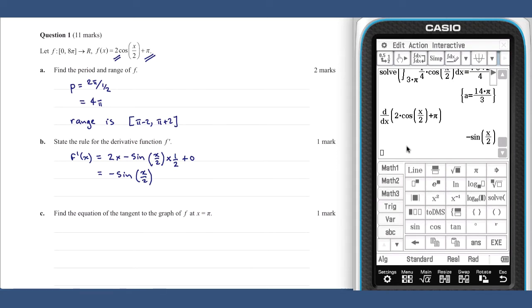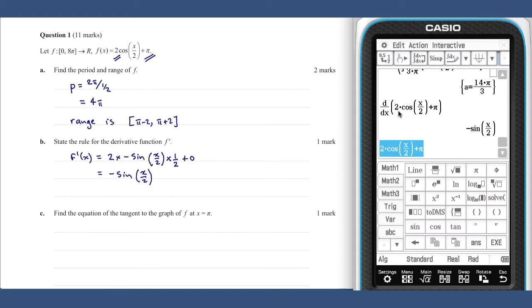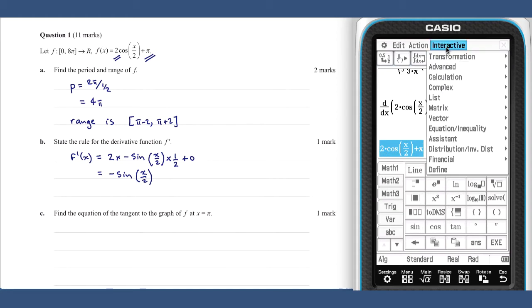For part c we need to find the equation of the tangent to the graph at x equals pi. This question is only worth one mark, so the most time efficient way to do this is directly from the class pad. If we take our function and place it in a new line and then utilize the tan line calculation.